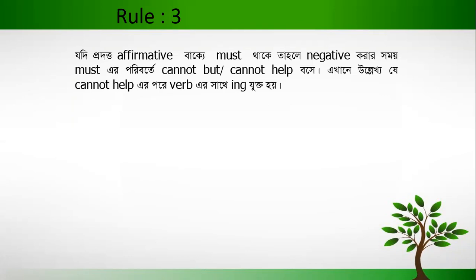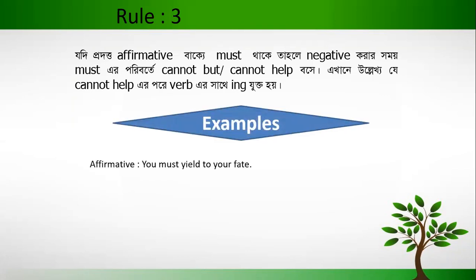This is also an easy rule. If you see some examples it will be very clear to you. The first example: 'You must yield to your fate.' This is an affirmative sentence and the word 'must' is used here. We can change this sentence into negative by replacing 'must' with 'cannot but' or 'cannot help'.